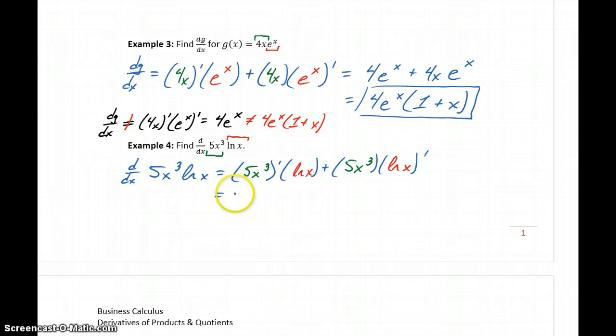So differentiating will give us 15x² natural log of x plus 5x³ times 1/x, or 15x² natural log of x plus—one of our x's is going to cancel between the numerator and denominator—plus 5x².